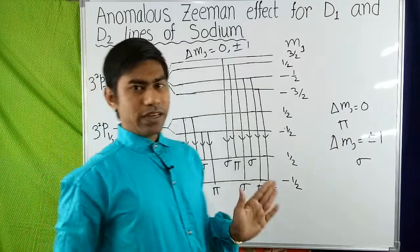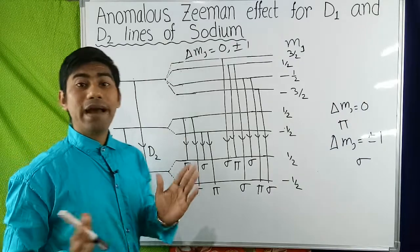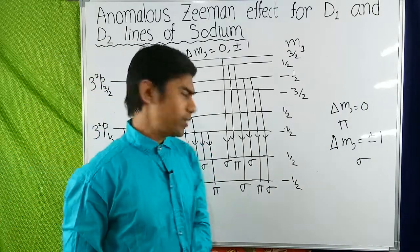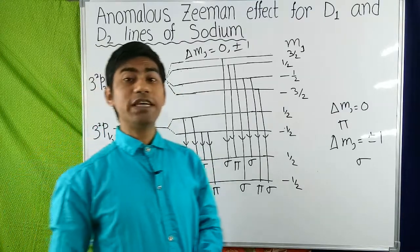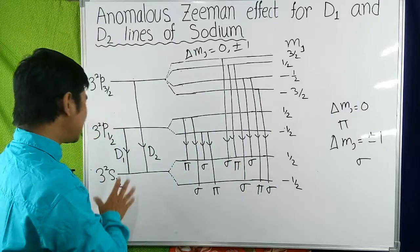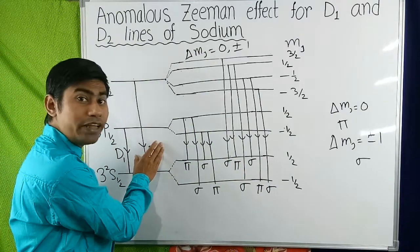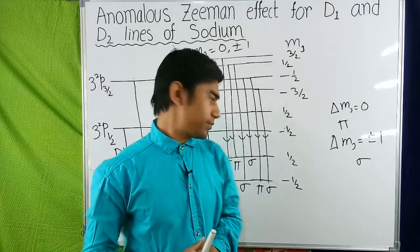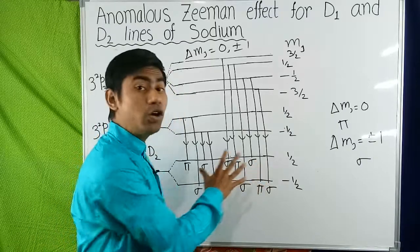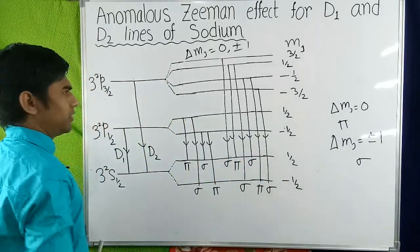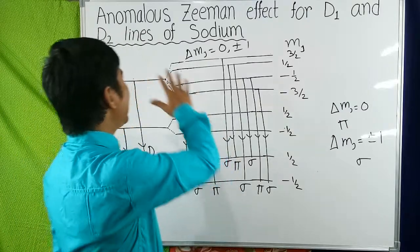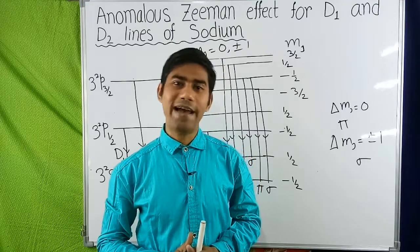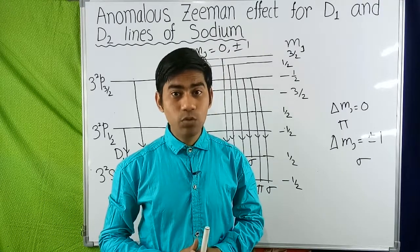Thus, we can say that after application of the magnetic field, D1 line is split into 4 components — 2 pi components and 2 sigma components — and D2 line of sodium atom is split into 6 components. This explains the anomalous Zeeman effect for D1 and D2 lines of sodium atom. Thank you for watching this video.